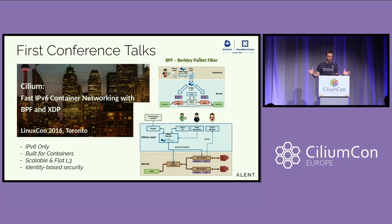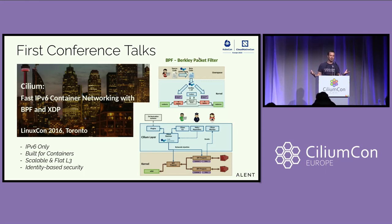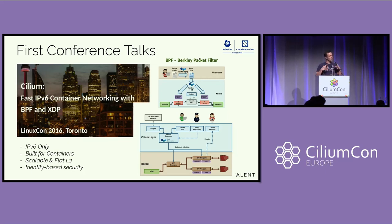This was the first real big conference talk — in Toronto, LinuxCon. Cilium was actually IPv6-only at the time. We wanted to be very forward-looking and build the next-generation networking layer, so it was intent-based, IPv6-only, built for containers, and identity-based. The IPv6-only approach, we quickly learned, was a little bit on the extreme side, so eventually we had to add IPv4 support as well. But Cilium's core design using eBPF is still what we use today.